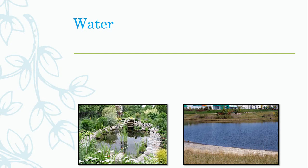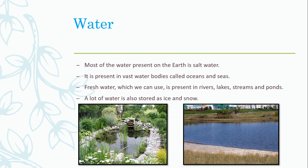Most of the water present on the earth is salt water. It is present in vast water bodies called oceans and seas. Oceans and seas are too big and they contain salty water, which we cannot drink. Fresh water we can use is present in rivers, lakes, streams and ponds. Even though that water is fresh, we need to purify it because tiny germs are still present in it. A lot of water is also stored as ice and snow.